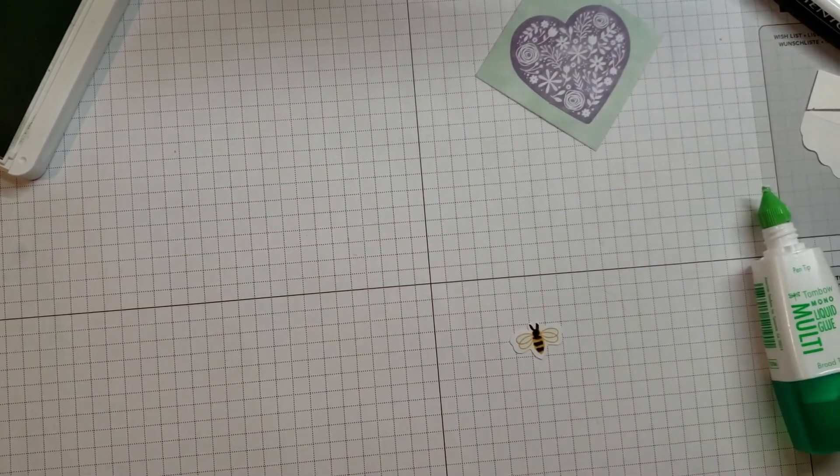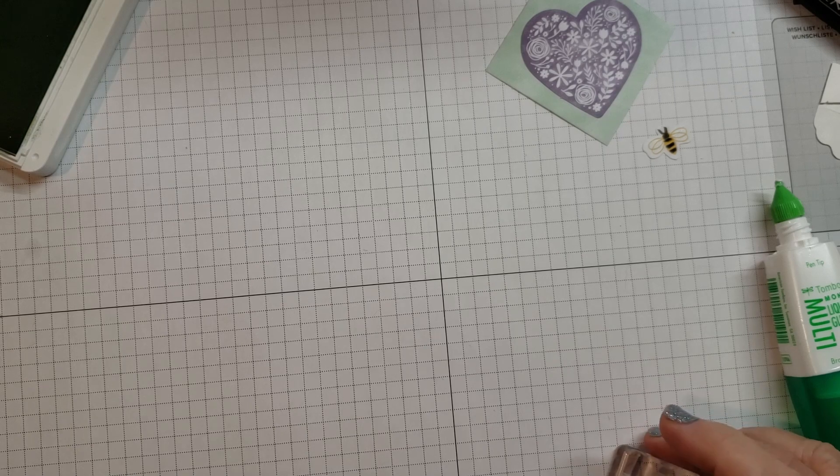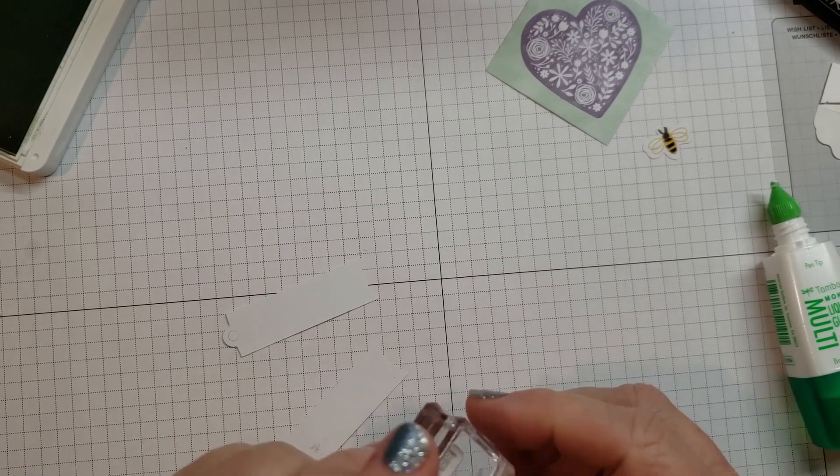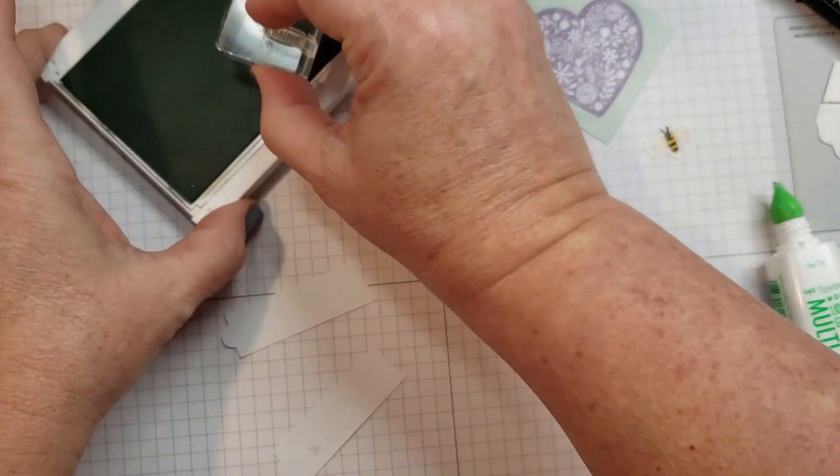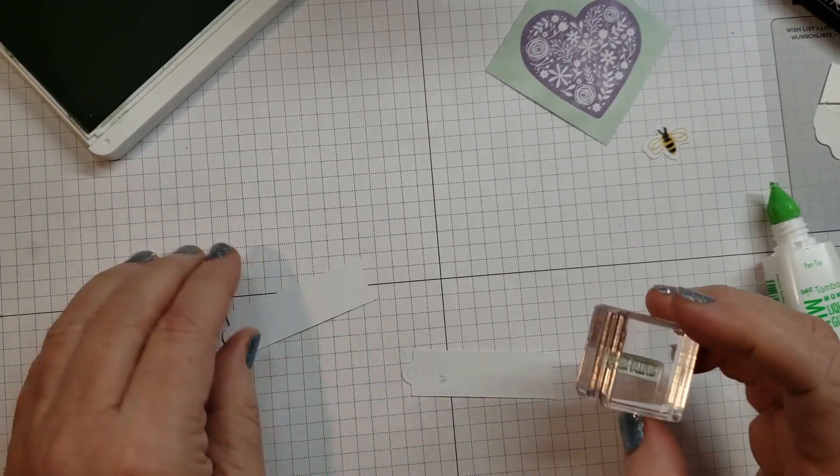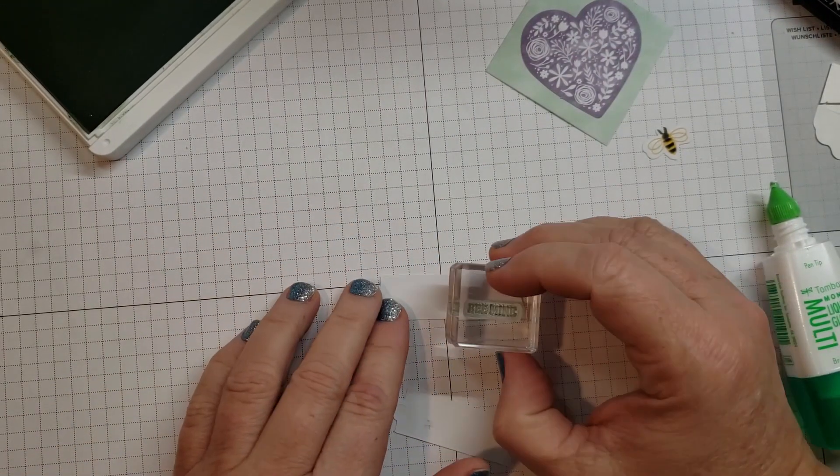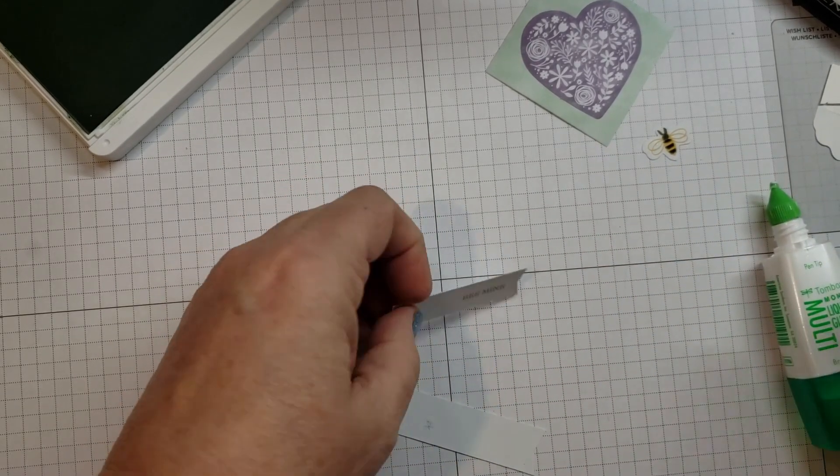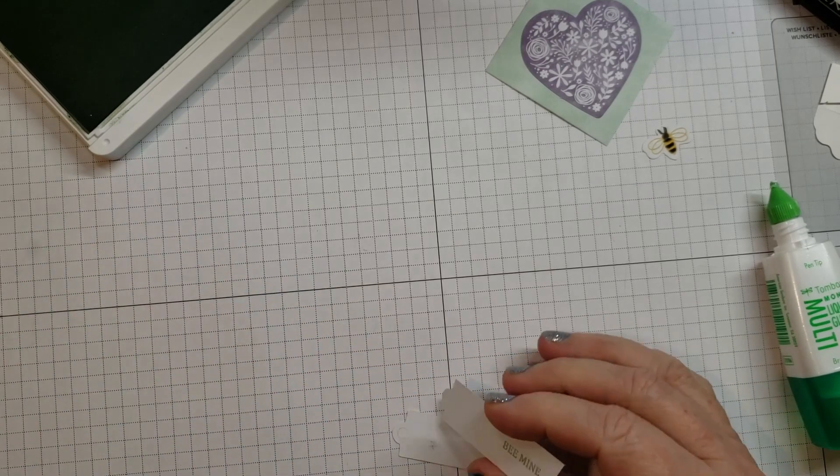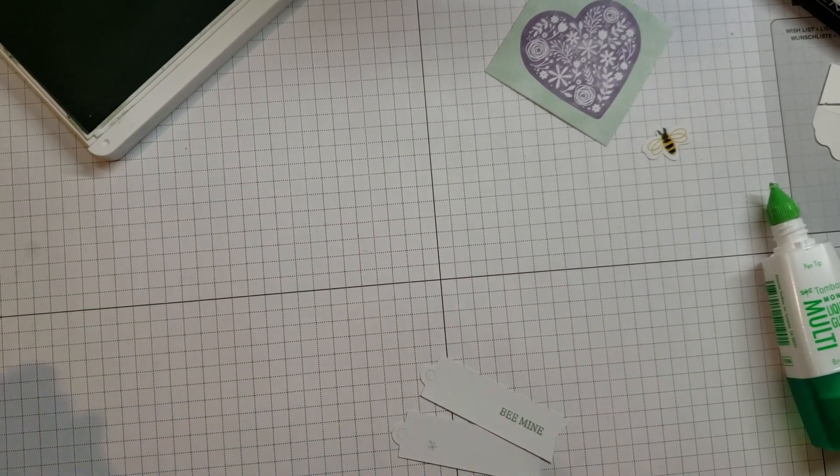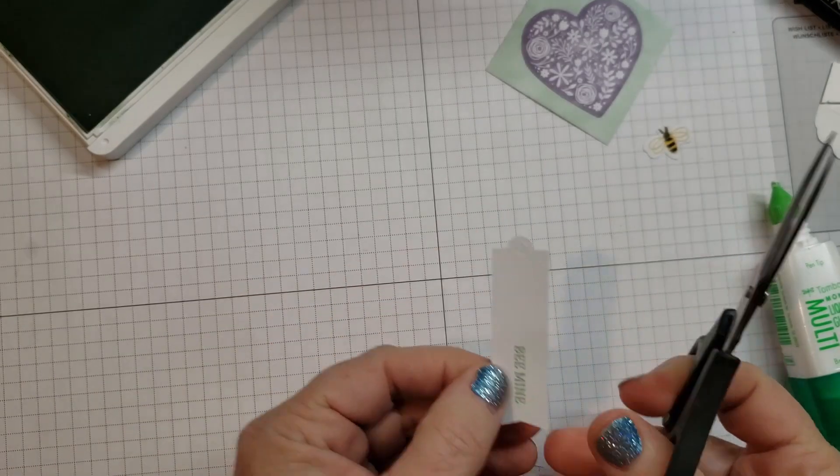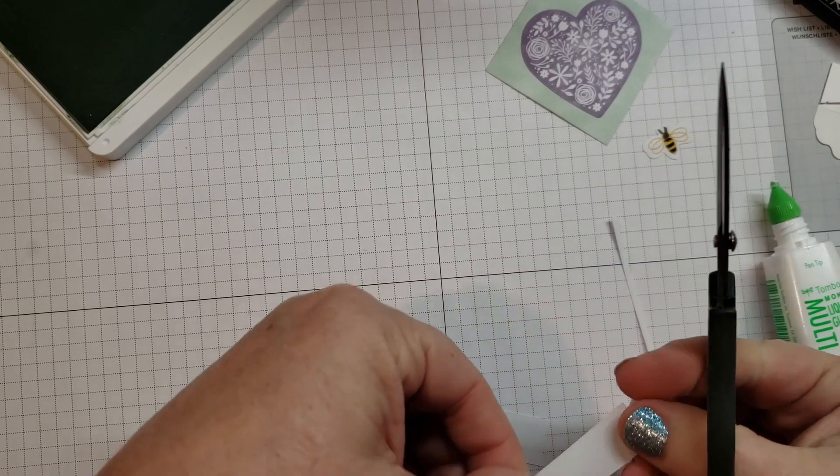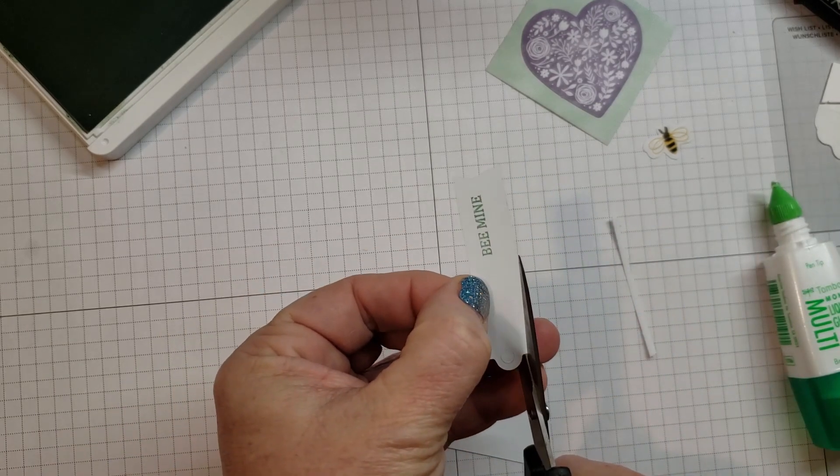Let's set our little bee aside and work on our sentiment, which is 'be mine.' I think that's just so cute - 'be mine.' We're going to stamp one of these. These came in the kit as well, and I'm going to stamp it right towards the middle there. But then I want to trim this piece down because I just found it to be a little large for what I was doing, so I'm just going to use my scissors and make this a little bit skinnier.